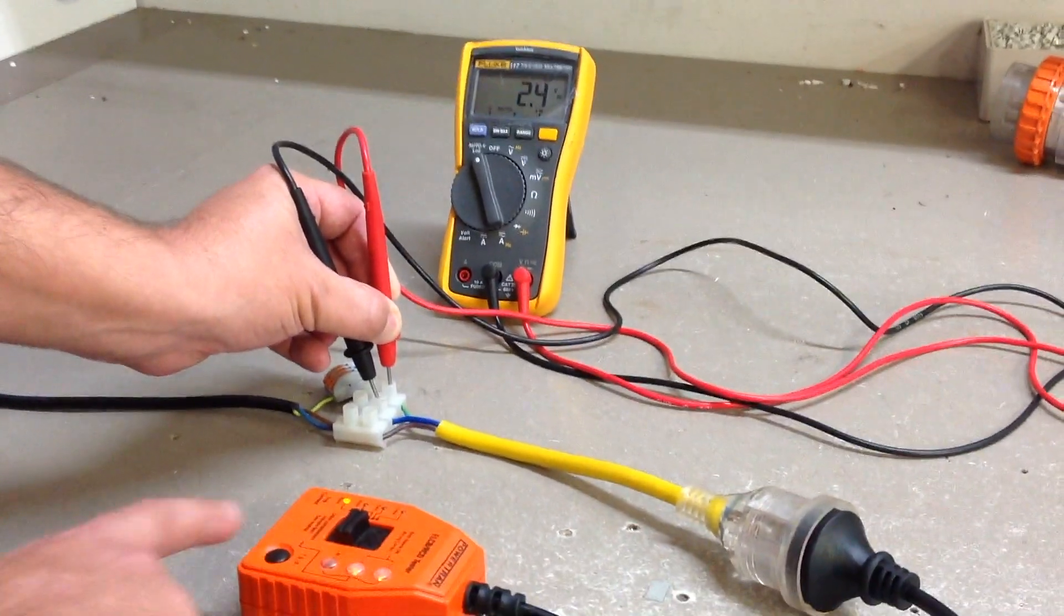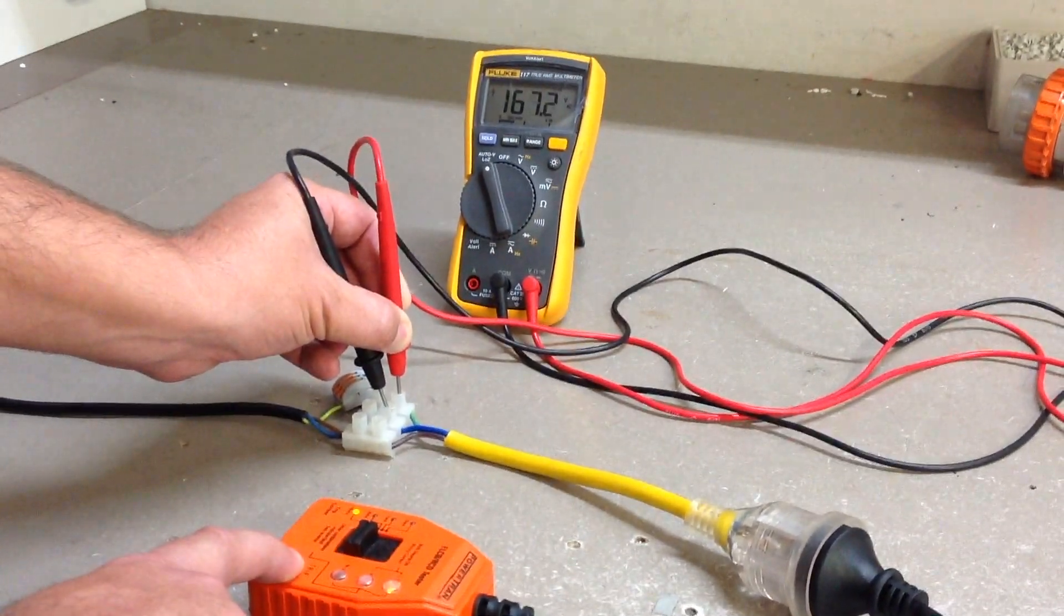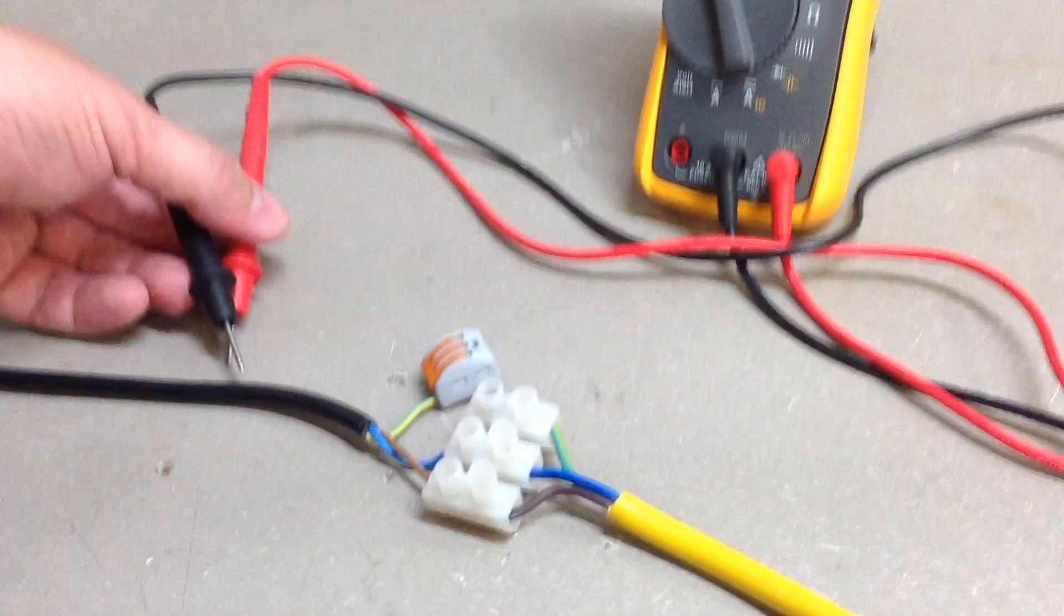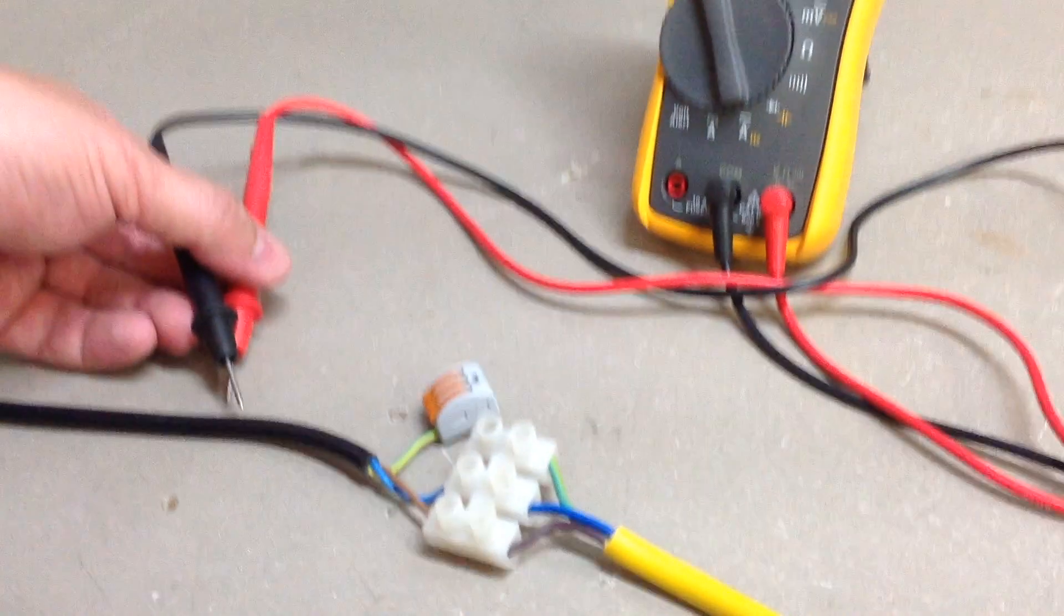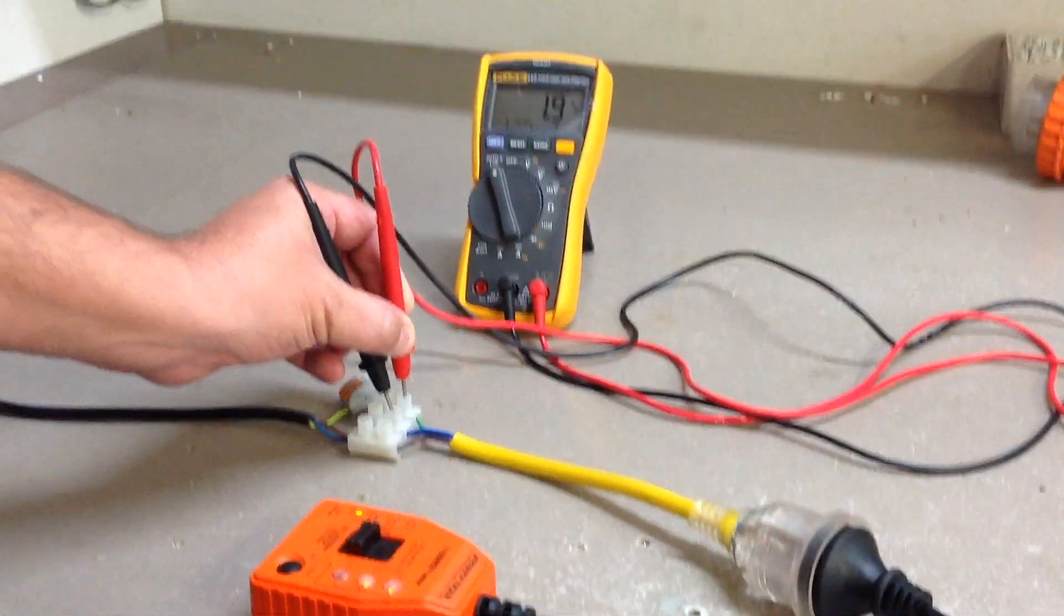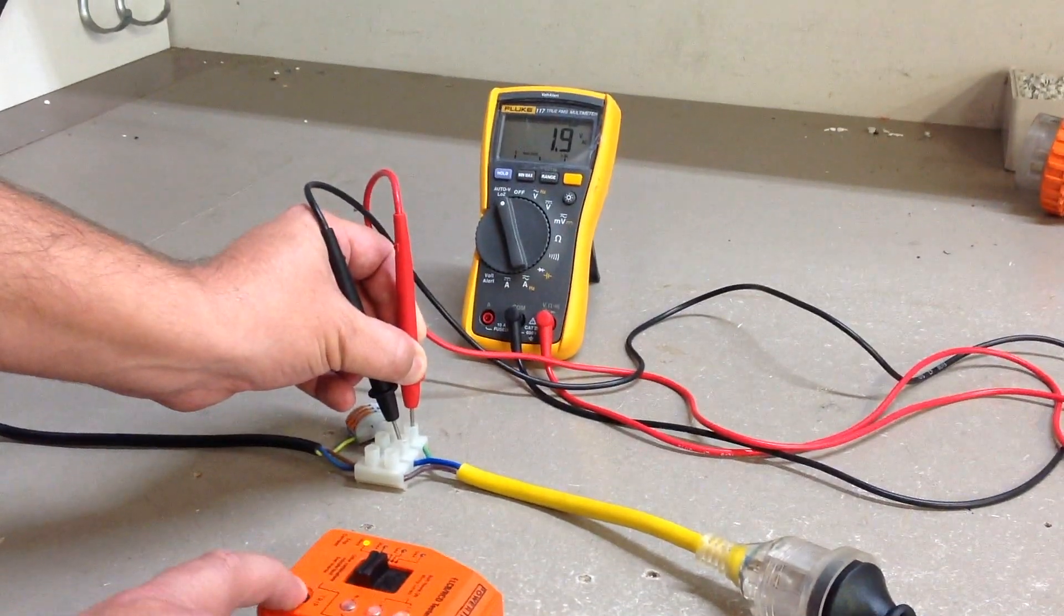By connecting the RCD tester to a lead that we have made up and removing the earth wire from the connection to the main circuit, we can see that by pressing the test button on the RCD tester,